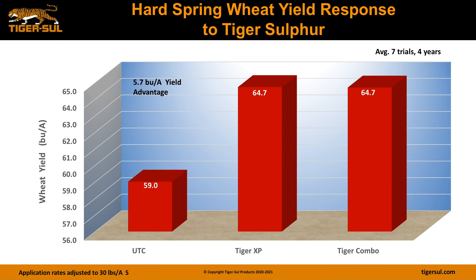Looking at yields from trials Tiger conducted — seven trials over the last four years in Alberta and Saskatchewan — the untreated control, which received no sulfur but did receive nitrogen, phosphorus, and potassium, yielded 59 bushels per acre, compared to Tiger XP at 64.7 bushels and our Tiger Combo product also at 64.7 bushels. Tiger Combo is ammonium sulfate coated with our Tiger 90 product. The yields being equal between the two products shows that Tiger XP's gradual release is equivalent in maximizing yield potential compared to Tiger sulfur combined with ammonium sulfate.